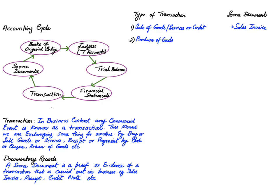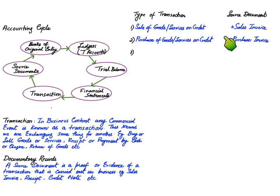The next transaction is purchase of goods or services on credit. The document will be a purchase invoice. An invoice is the same document — if I am selling goods I name it a sales invoice, and for my customer it is known as a purchase invoice. The seller names it a sales invoice; for the buyer, the same invoice is known as a purchase invoice. Again, an invoice is only used in credit transactions, not cash transactions.